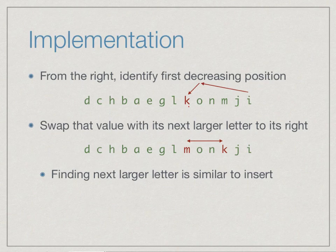Having done this, we now need to replace k by the letter to its right which is next bigger. This is like insert: we go one by one. K is smaller than o, so we continue. K is smaller than n, so we continue. K is bigger than j, so we stop here. This tells us that the letter m is the one that we want. We can identify this in one scan because it is in descending order, so it is in sorted order. It is exactly like inserting something into a sorted list.